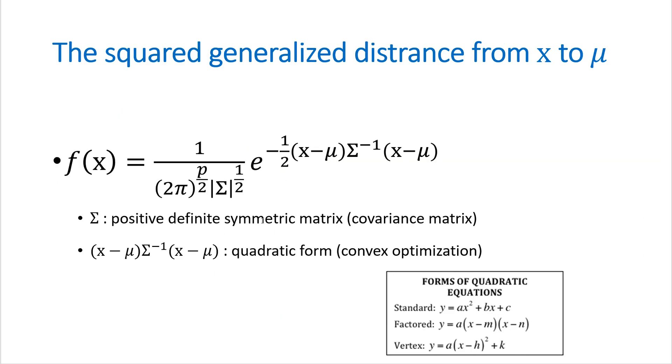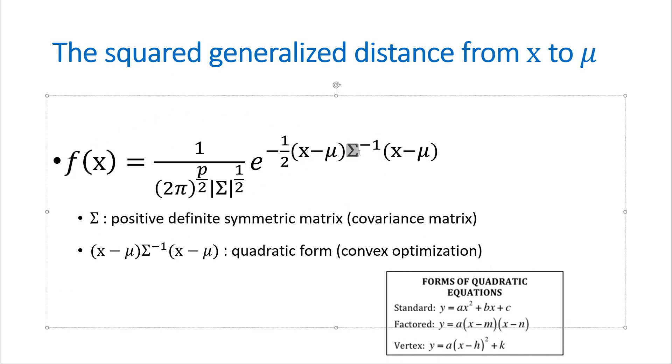In many statistical analysis, multivariate normal distribution is assumed. So the square generalize distance from x to mu can be written like this form. This sigma is a positive semisymmetric matrix and this term is quadratic form. So it means that it is differentiable. And also this is a kind of tip, how we call it quadratic form.